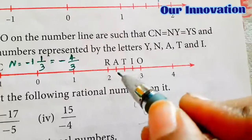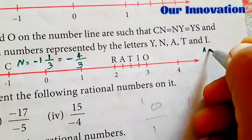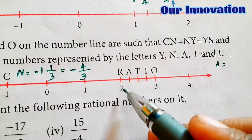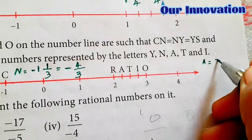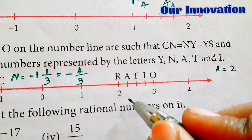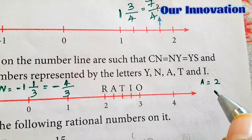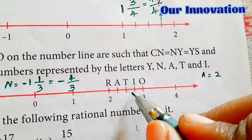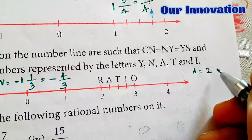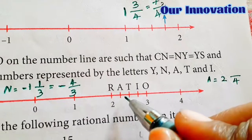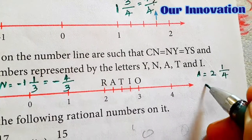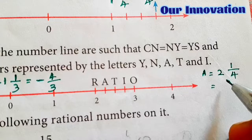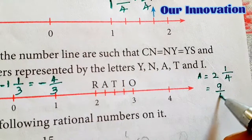Now find A. A is between 2 and 3, so whole number is 2. The sign is positive. The interval is divided into 4 parts — 1, 2, 3, 4 — so denominator is 4. A is at the 1st position. Converting to improper fraction: 4 into 2 is 8, plus 1 is 9. So A equals 9 by 4.